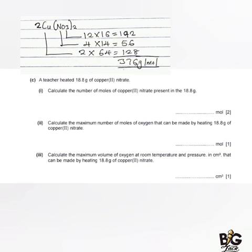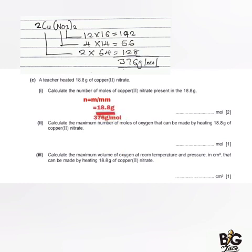Since number of moles equals mass over molar mass, the number of moles of copper 2 nitrate is 18.8 grams divided by 376 grams per mole, giving a final answer of 0.05 moles of copper 2 nitrate.